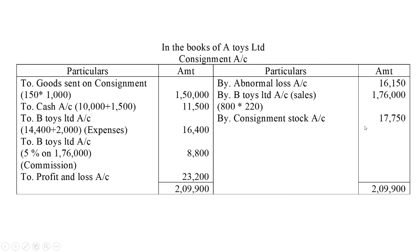Commission calculation: 5% on Rs. 1,76,000 = Rs. 8,800, debited to B Toys Limited account. Total credit side is Rs. 2,09,900. The difference gives a profit of Rs. 23,200, which will be transferred to profit and loss account.